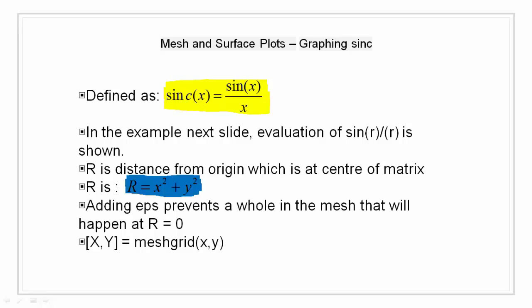Here, I am going to use mesh grid. x y equals mesh grid transforms the domain specified by vectors x and y into arrays X and Y that can be used for evaluation of functions of two variables and 3D surface plots. The rows of output array x are copies of vector x and the columns of output array Y are copies of vector y.